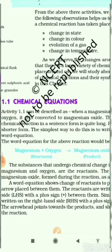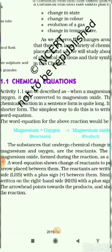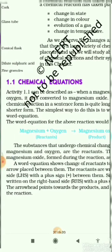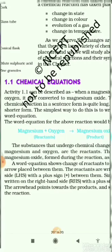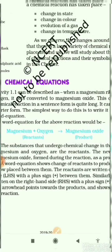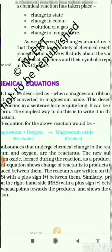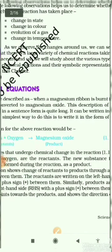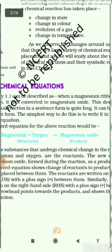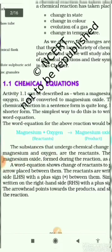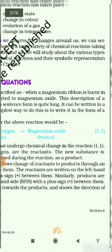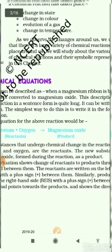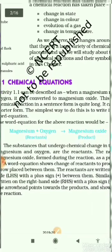In the chemical equation, I will explain with the help of Activity 1.1. In Activity 1.1, we have taken a magnesium ribbon. The magnesium ribbon is burnt in the presence of oxygen and it is converted to magnesium oxide. These chemical reactions can be represented in two ways.